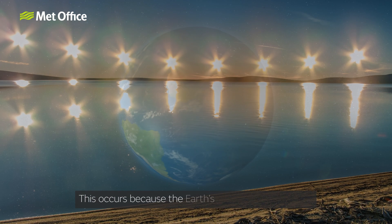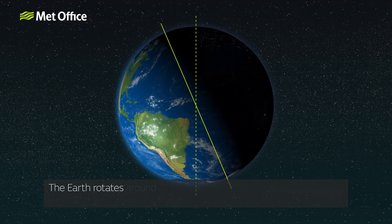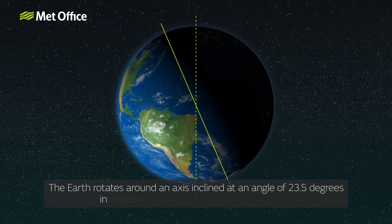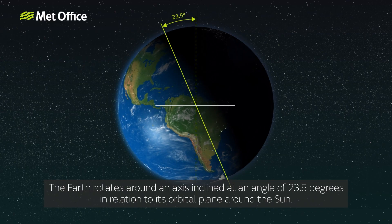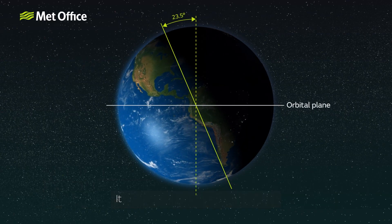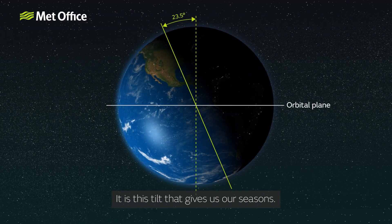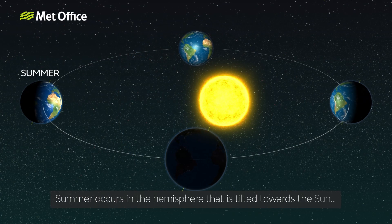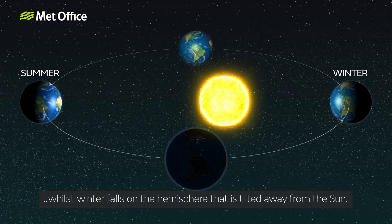This occurs because the Earth's rotational axis is tilted. The Earth rotates around an axis inclined at an angle of 23.5 degrees in relation to its orbital plane around the Sun. It is this tilt that gives us our seasons. Summer occurs in the hemisphere that is tilted towards the Sun, whilst winter falls on the hemisphere that is tilted away from the Sun.